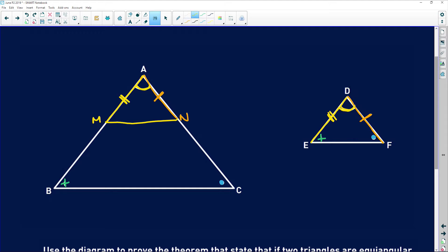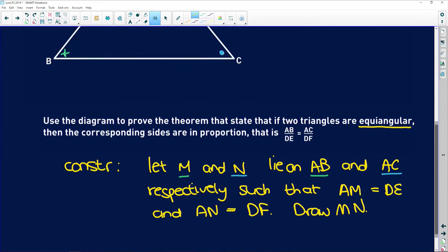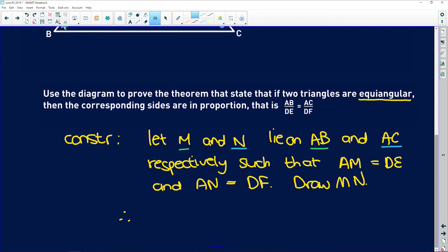So by construction, side, angle, side, those two are congruent. Therefore, triangle AMN is congruent to triangle DEF because of side, angle, side, by construction.